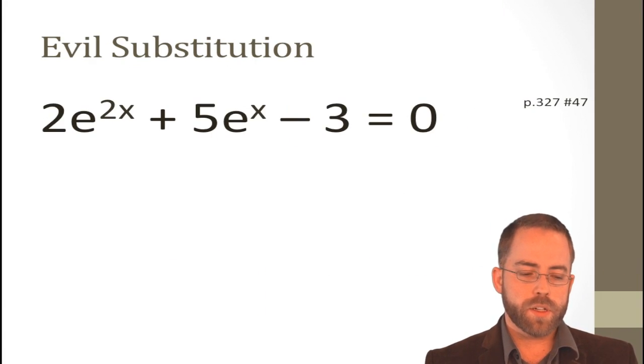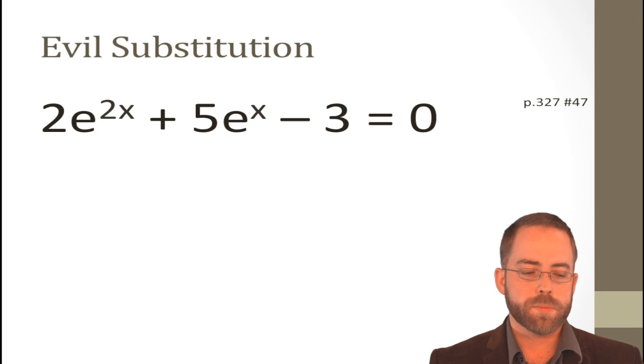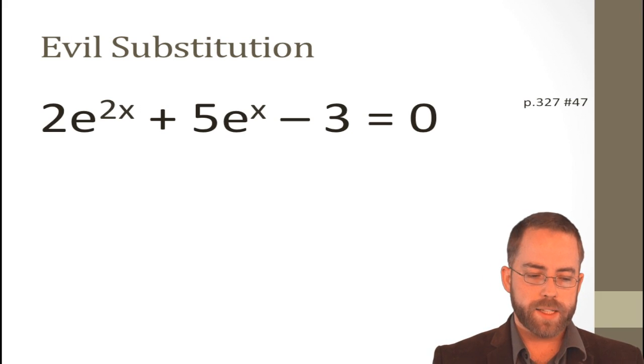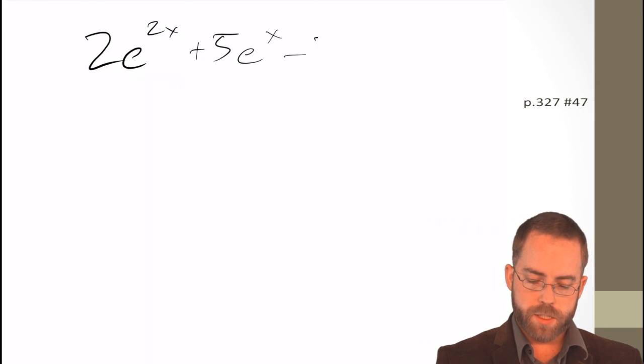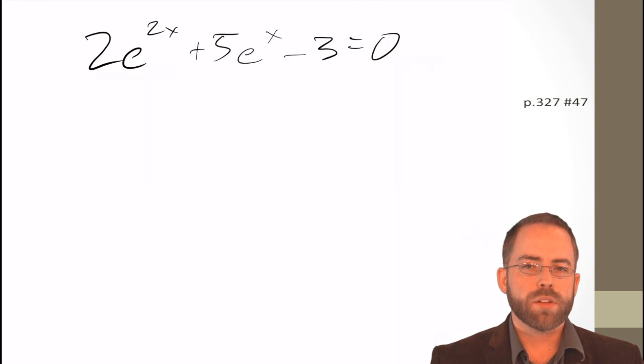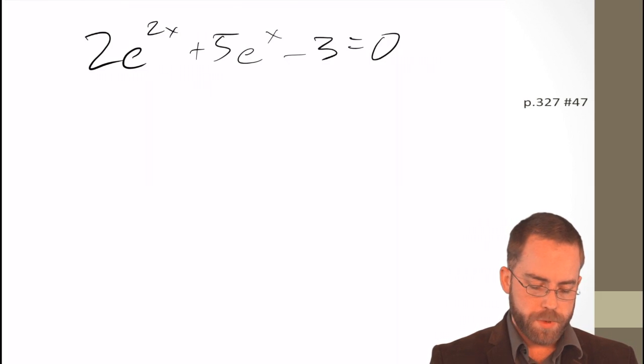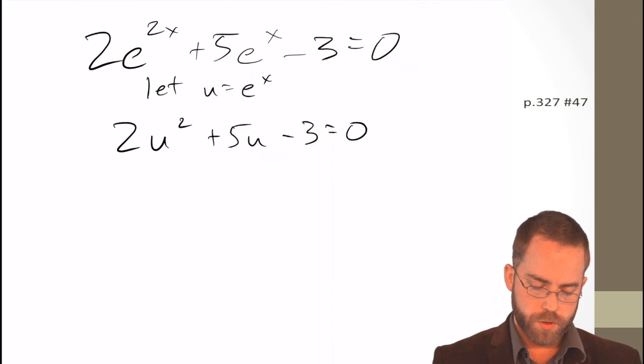Last example here is, or second to last example, is we have a case where we need to do some substitution. We've got a horrible problem that is quite unsolvable as is. We've got 2 times e to the 2x plus 5 e to the x minus 3 equals 0. That's not something that I'm going to be able to solve just looking at it here. So, I'm going to wish away the part that I don't like. I'm going to let u equal e to the x. And now, I'm saying 2u squared plus 5u minus 3 equals 0.